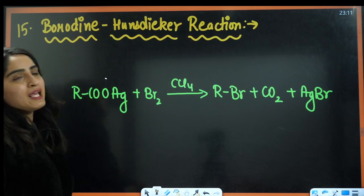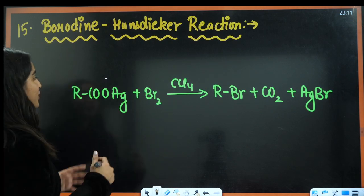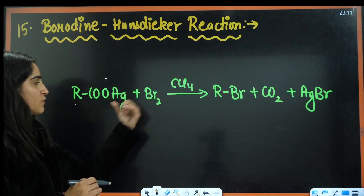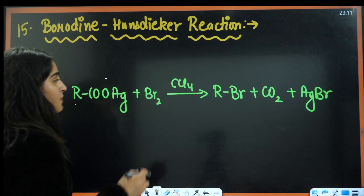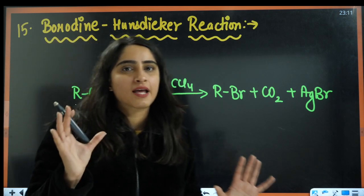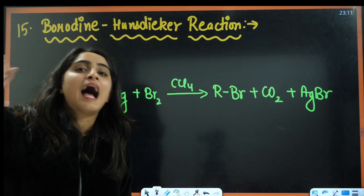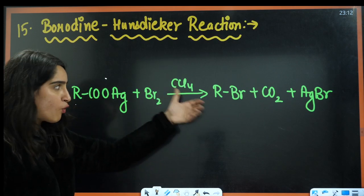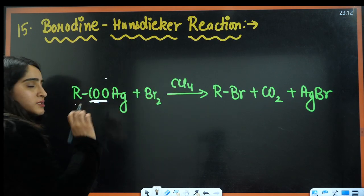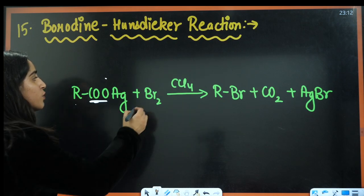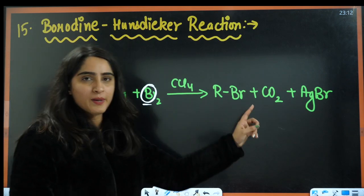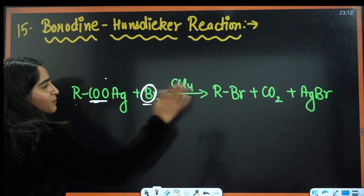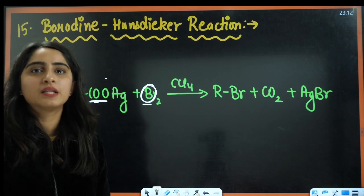Next is Borodine-Hunsdiecker reaction — silver salt of carboxylic acid (RCOOAg) with Br₂ in CCl₄. Students often confuse this with HVZ reaction. Here the whole COO part — CO₂ goes out, AgBr goes out — and Br is attached to R, giving RBr. Do not confuse this with HVZ reaction where the alpha hydrogen is being replaced.